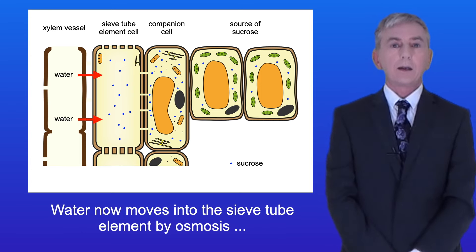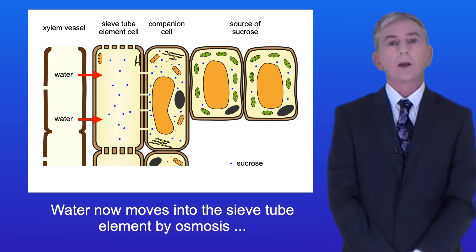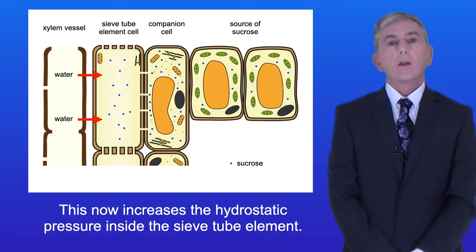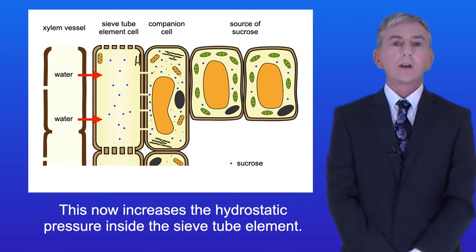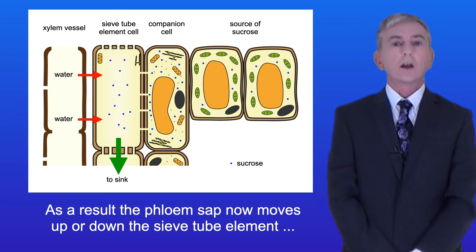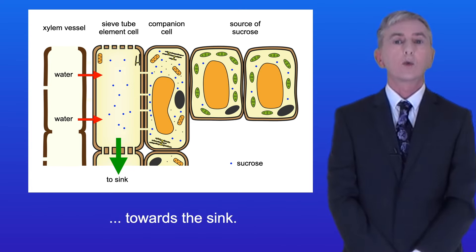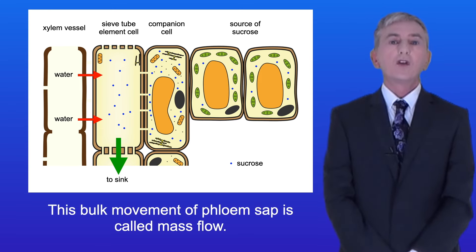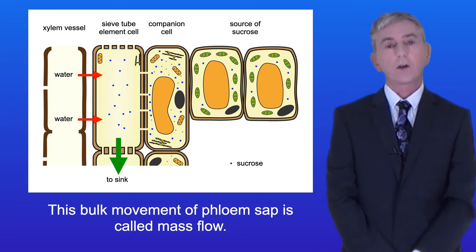Water now moves into the sieve tube element by osmosis from nearby tissues including the xylem vessels. This increases the hydrostatic pressure inside the sieve tube element. As a result, the phloem sap now moves up or down the sieve tube element towards the sink. This bulk movement of phloem sap is called mass flow.